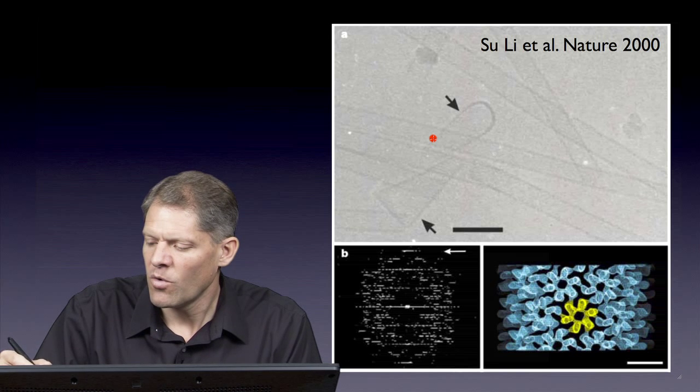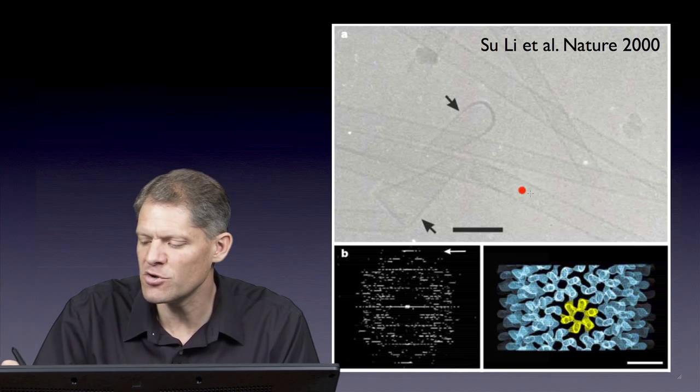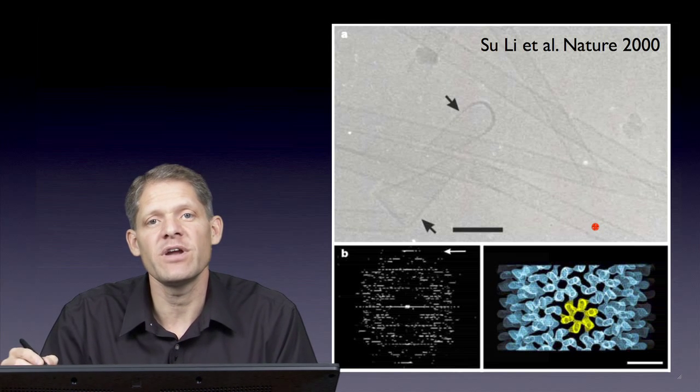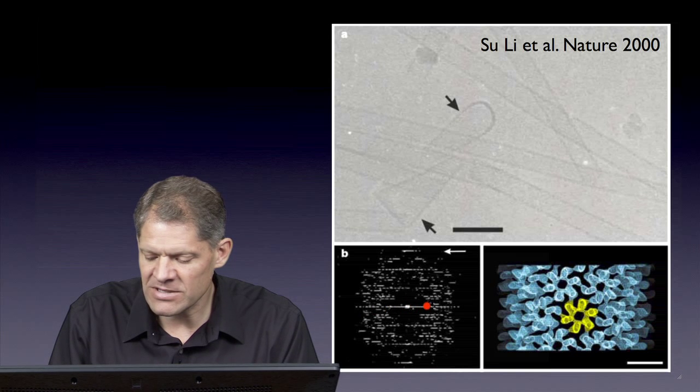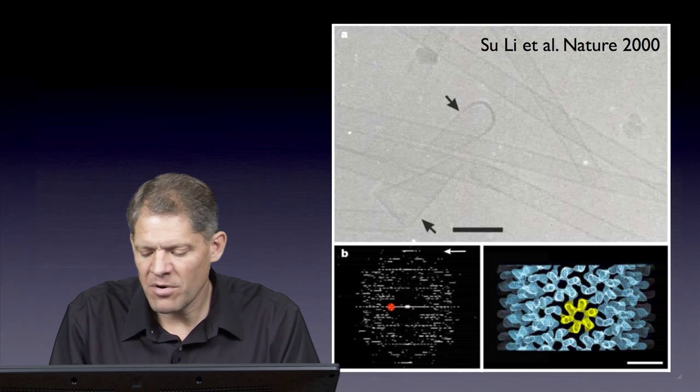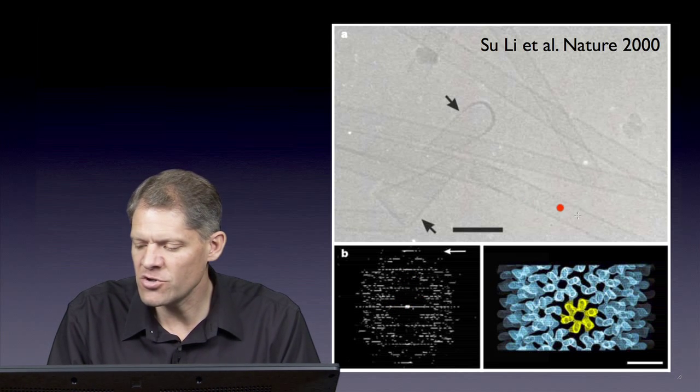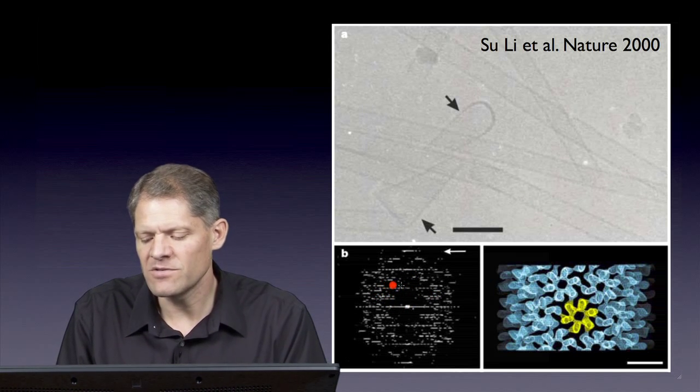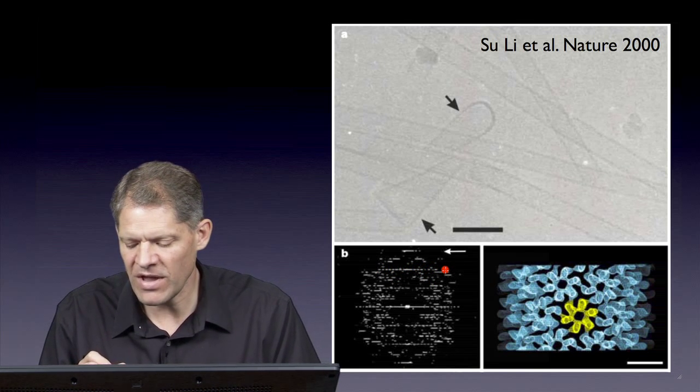Nevertheless, when the authors took straight segments of the helical tubes and calculated the Fourier transform of those images, the diffraction pattern looks like this. Instead of being a number of discrete spots, the Fourier transform of a tube has a series of so-called layer lines of varying amplitude and phase.